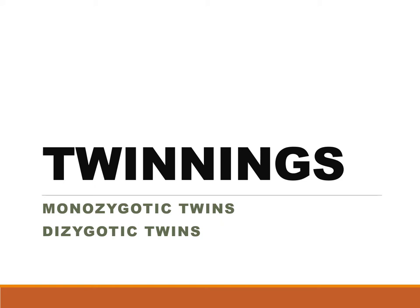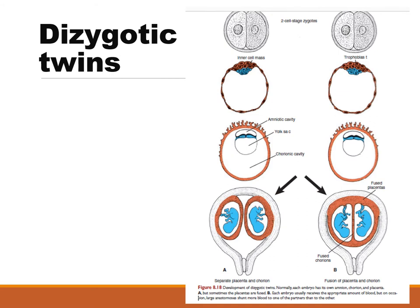There are actually two types of twinning: monozygotic twins and dizygotic twins. Dizygotic twins, otherwise known as fraternal twins, are formed when there are two ova that are fertilized by two sperms, resulting in the formation of two zygotes. In figure A, the two zygotes implant with a little more distance from each other, resulting in the formation of a separate placenta and chorion. In figure B, the two zygotes implant very close to each other, resulting in the fusion of the placenta and the fusion of the chorion.